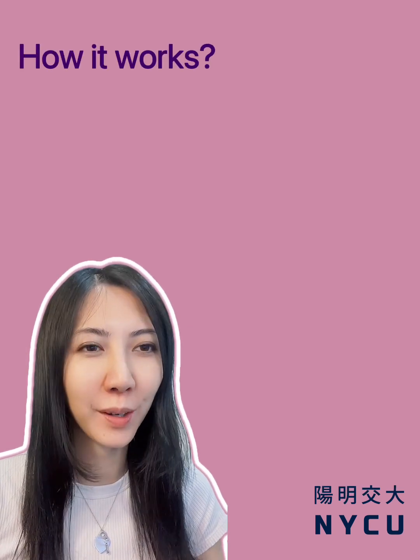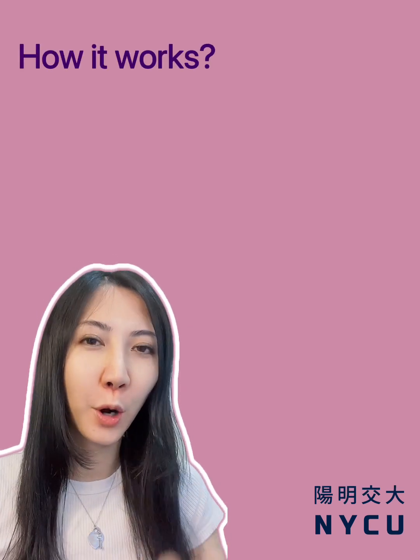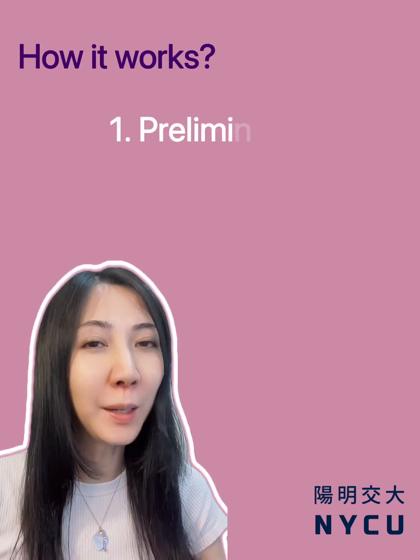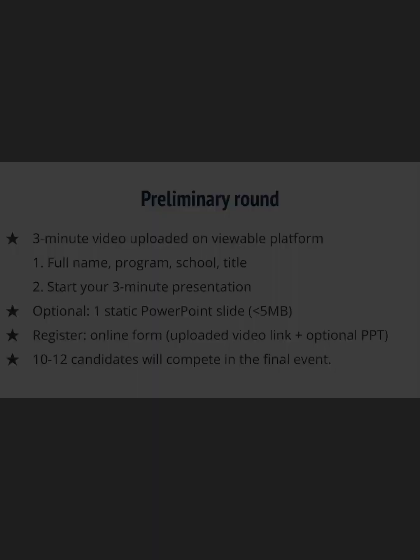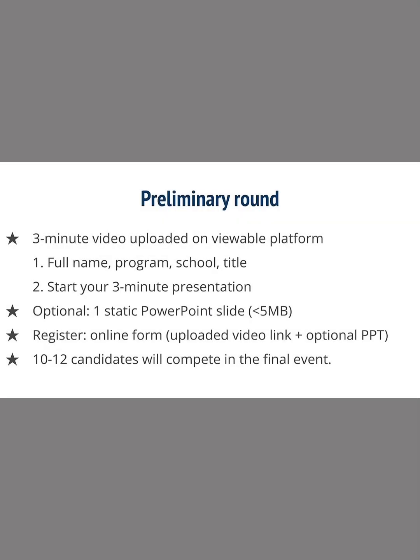Now let's move on to how the competition works. There are two rounds: the preliminary round and the final round. Joining the first round is easy — you just need to make a three-minute video and upload it on YouTube or any viewable platform. In the video, start by saying your full name, program, school, and the title of your presentation.